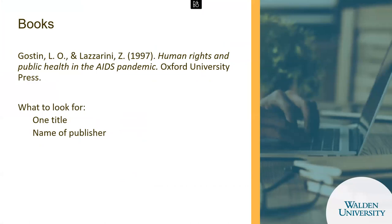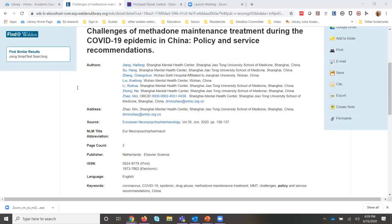What about books? Books are going to have just one title if you're looking at the whole book. It will start again with the author name, give you the title of the book, and then give you the name of the publisher — in this case Oxford University Press. Many times publishers have 'press' in the name, but not necessarily.